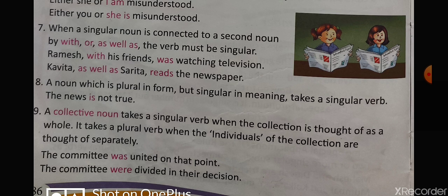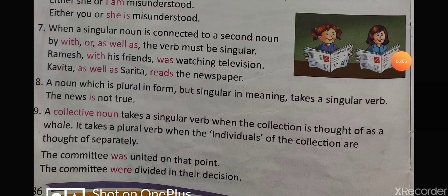A noun which is plural in form but singular in meaning takes a singular verb. For example, 'The news is not true' — 'news' is plural in form but the verb is singular. A collective noun takes a singular verb when the collection is thought of as a whole, and a plural verb when the individuals are thought of separately. For example, 'The committee was united on that point' uses a singular verb, while 'The committee were divided in their decision' uses a plural verb.